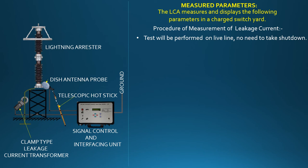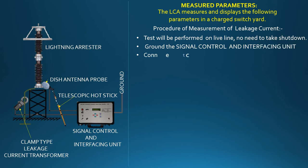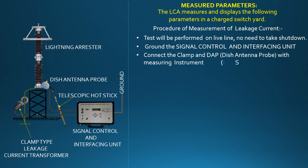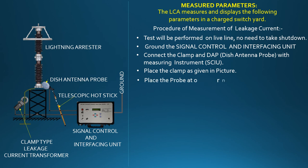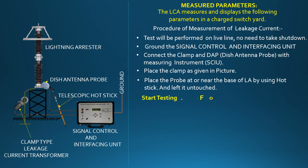First, ground the signal control and interfacing unit. Connect the clamp and decoupling antenna probe with the measuring instrument. Place the clamp as shown in the picture, and place the probe at or near the base of the lightning arrester to be measured using the hot stick, and leave it untouched. Start testing. The results will be displayed directly on the screen of the measuring instrument.